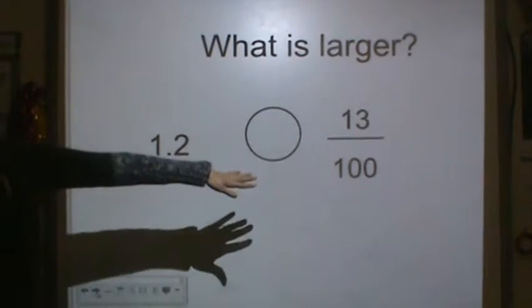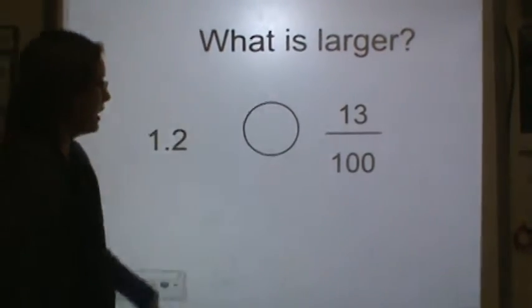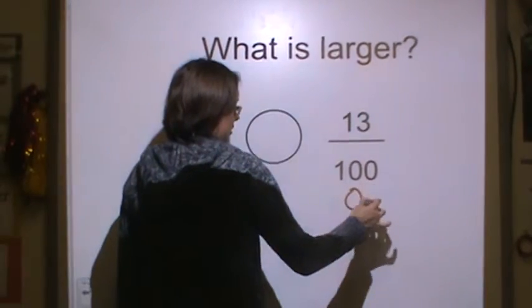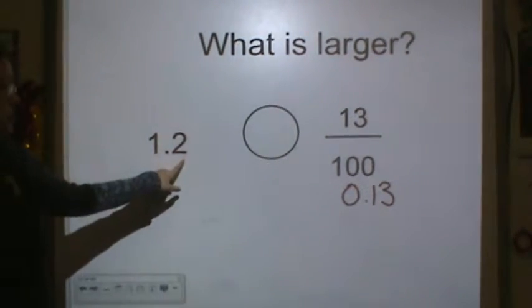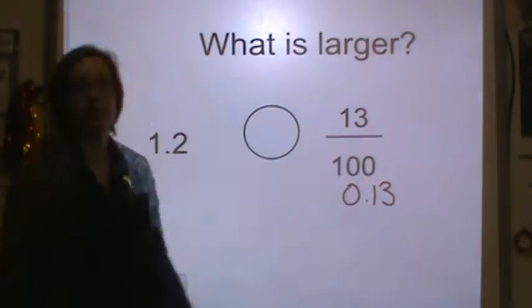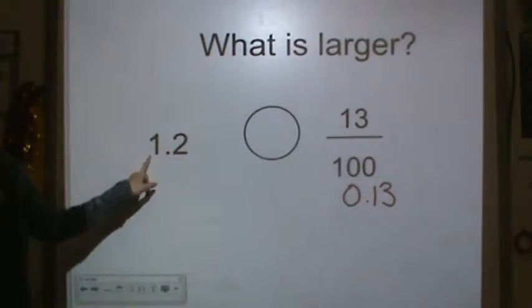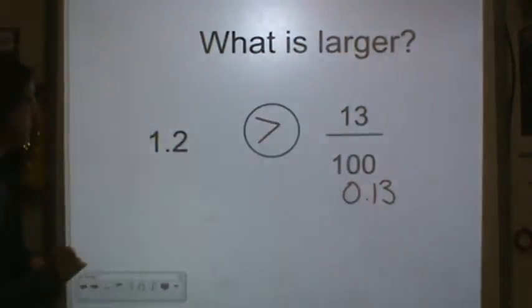Okay, I have 13 hundredths. I need to write this fraction as a decimal. And now I can see that 1 whole and 2 tenths is bigger than 13 hundredths. Because I have a whole here. So that is going to be bigger.